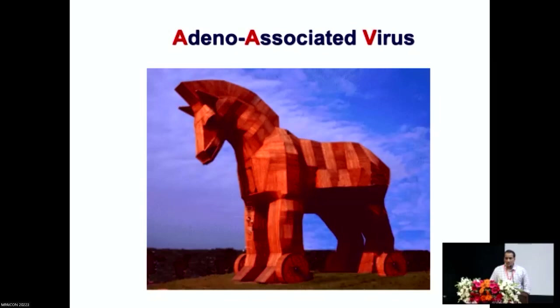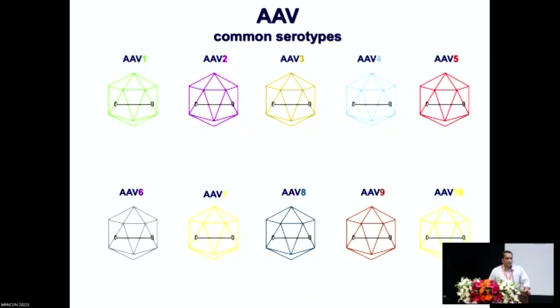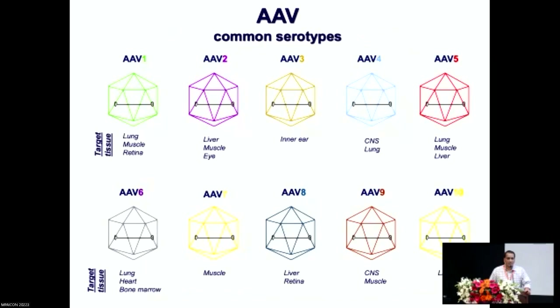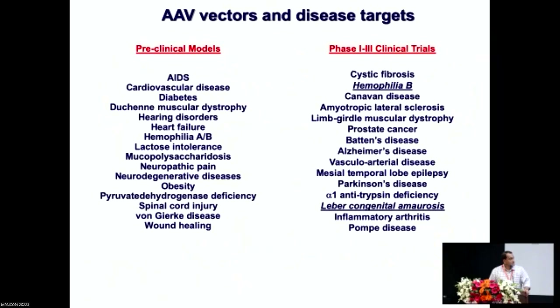There are at least 10 different serotypes of AAV that have been well described and used in multiple studies. The biggest advantage of the AAV system is we have specific serotypes to infect or target specific tissues in the human body. For example, if I would like to treat a liver-based disease, I would use AAV2 or AAV8 serotype because they are highly specific even when administered intravenously — they bind to very specific cell surface receptors on the hepatocytes. A majority of these serotypes have been used in multiple preclinical as well as clinical studies.